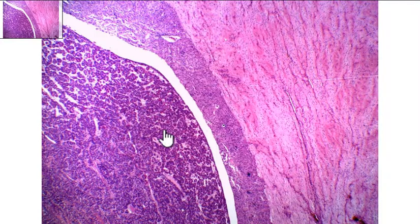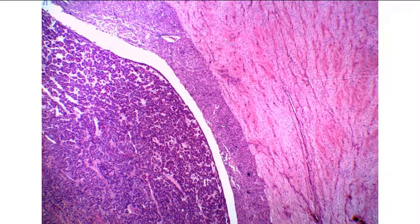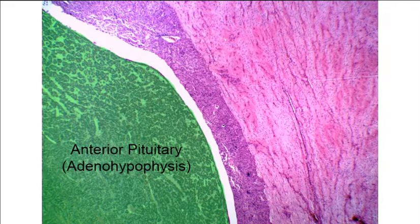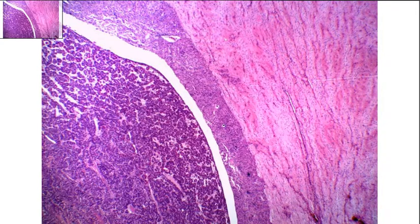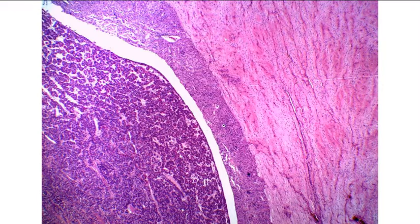With this more purple stain, you can see it looks a little more blotchy and glandular — this side is your anterior pituitary, or adenohypophysis. While this side, which is more of a light pink color, is going to be your posterior pituitary, or neurohypophysis.